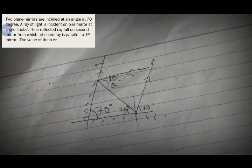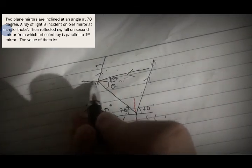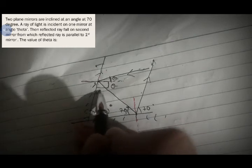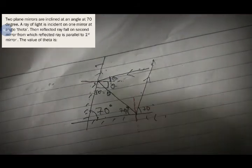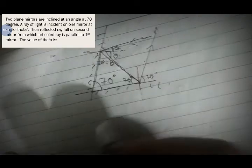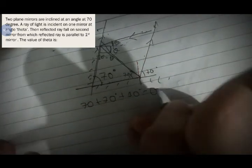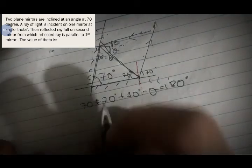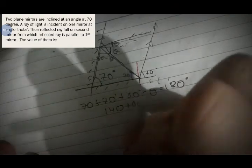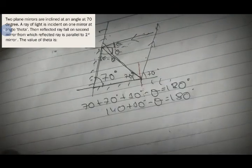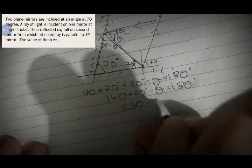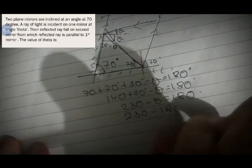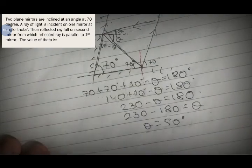The incident angle is theta. Using the normal, 90 minus theta appears in the triangle. The triangle gives: 70 plus 70 plus (90 minus theta) equals 180 degrees. So 140 plus 90 minus theta equals 180, giving 230 minus theta equals 180, so theta equals 50 degrees. That is the correct answer.